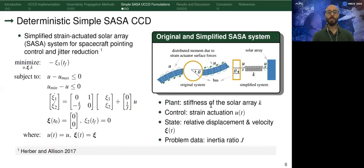The case study that we use is a simplified strain-actuated solar array. You can see the deterministic description of the problem on the left. Notice that the terminal condition requires the system to go to rest at final time. We have stiffness of the solar array as our plant variable, strain actuation as our control, relative displacement and velocity as our states, and finally, the problem data is the inertia ratio.